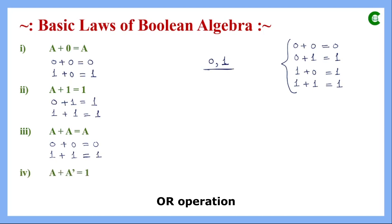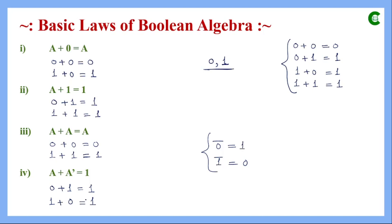The fourth law is a plus complement of a equals 1. If a is 0, then complement of a is 1, and 0+1=1. If a is 1, then complement of a is 0, and 1+0=1. So if we add a Boolean variable with its complement, the result is always 1. These four basic laws of Boolean algebra are based on addition — either a variable with a constant, or one variable with another.